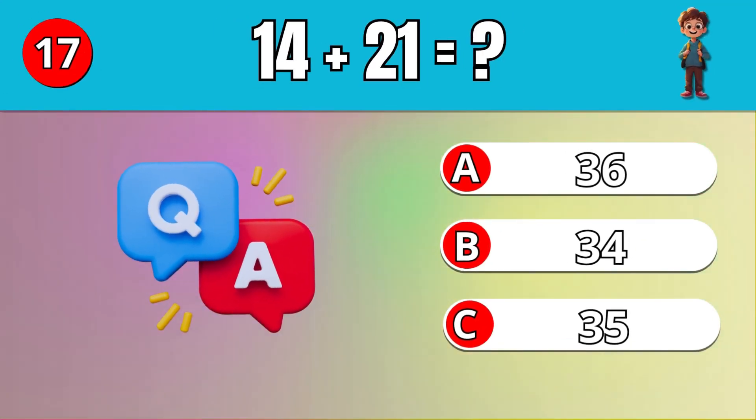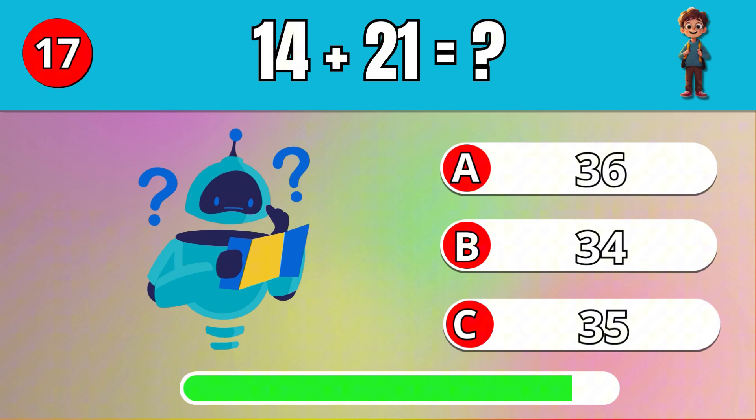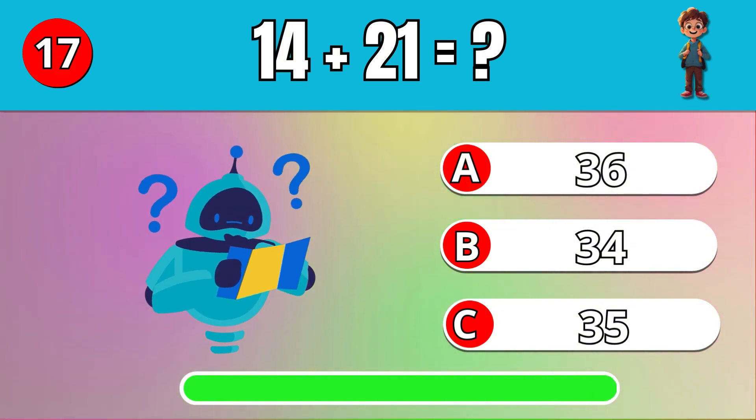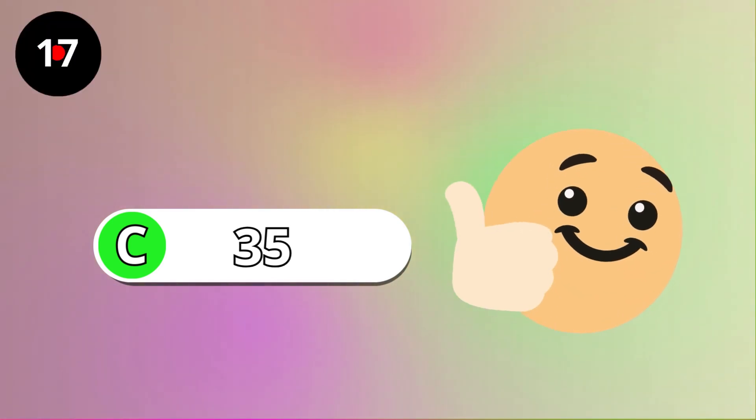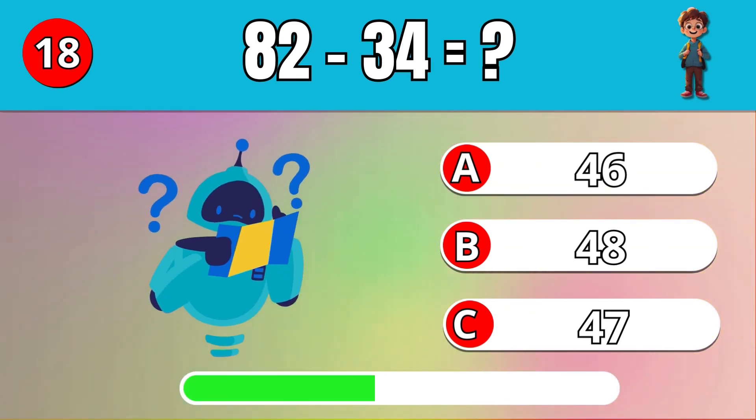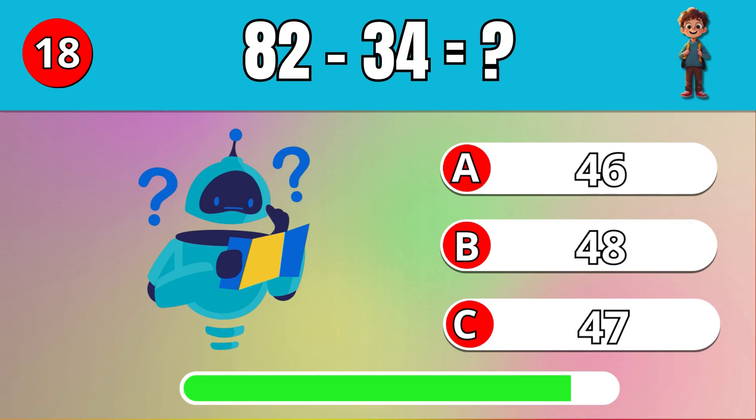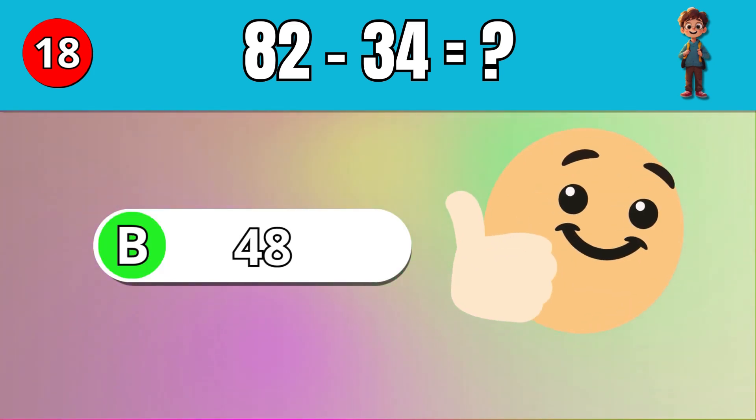What is 14 plus 21? C, 35. What is 82 minus 34? C, 48.